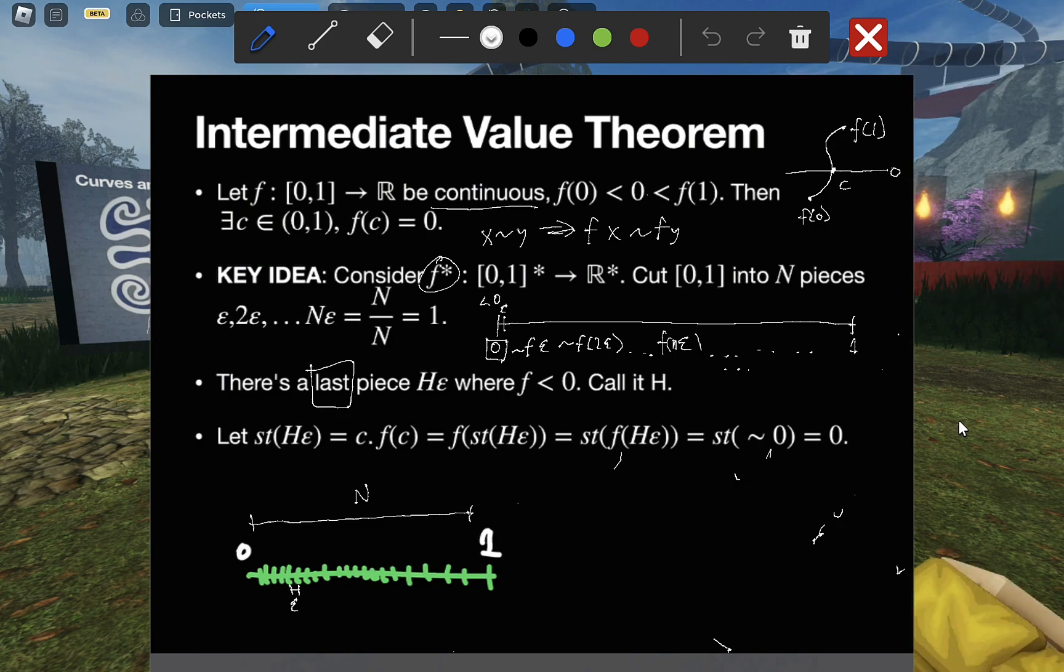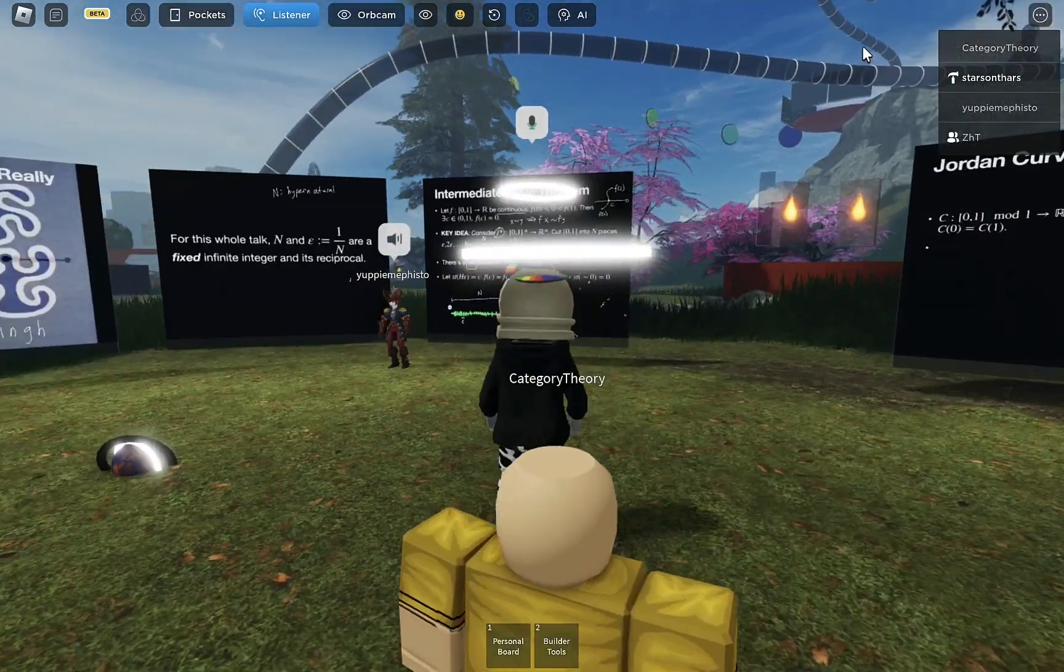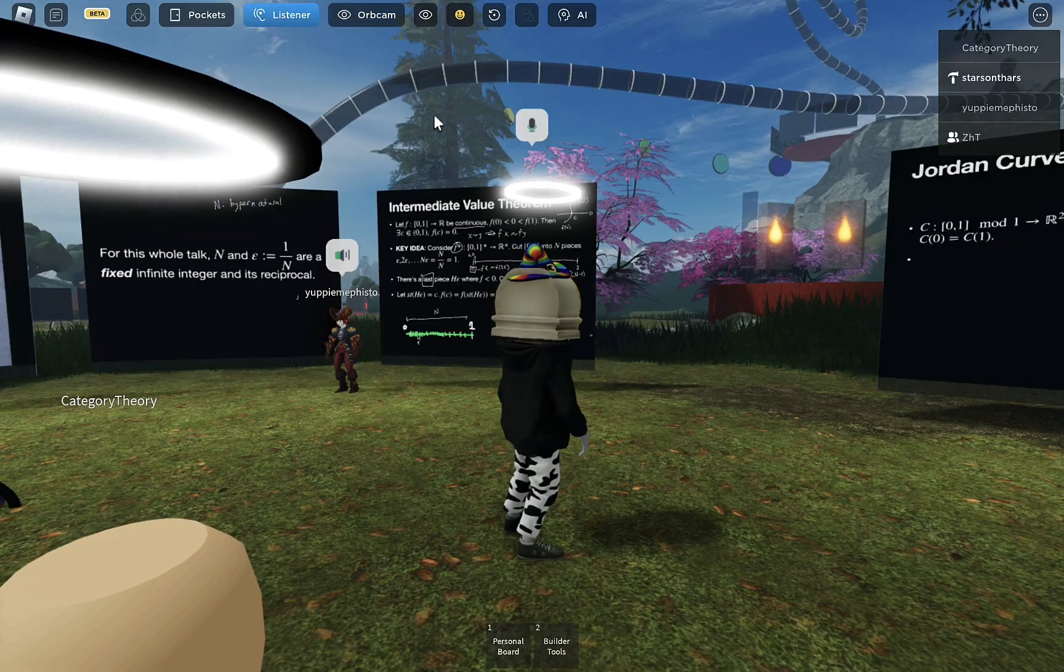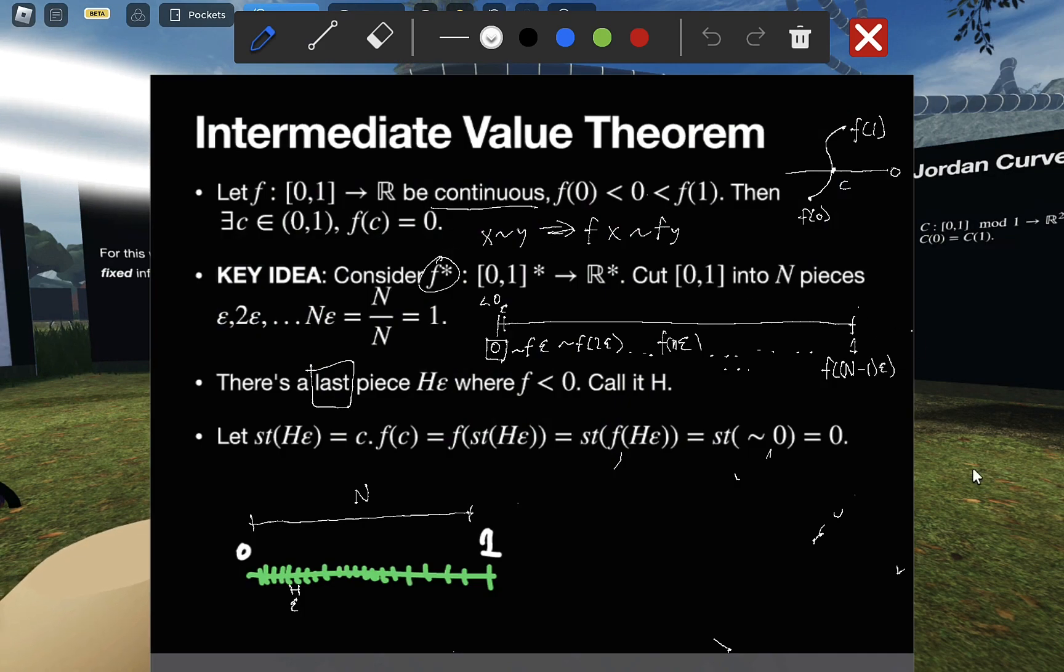So this will keep marching up to f of N minus one epsilon, and finally f of N epsilon, which is just one. And then there's this unbounded middle bit of an unlimited number of pieces. Nonetheless, each piece has some definite value. And so there are, quote, finitely many of them, where the word finite is doing a lot of heavy lifting. And so you could say there's some last time where the function was less than zero.